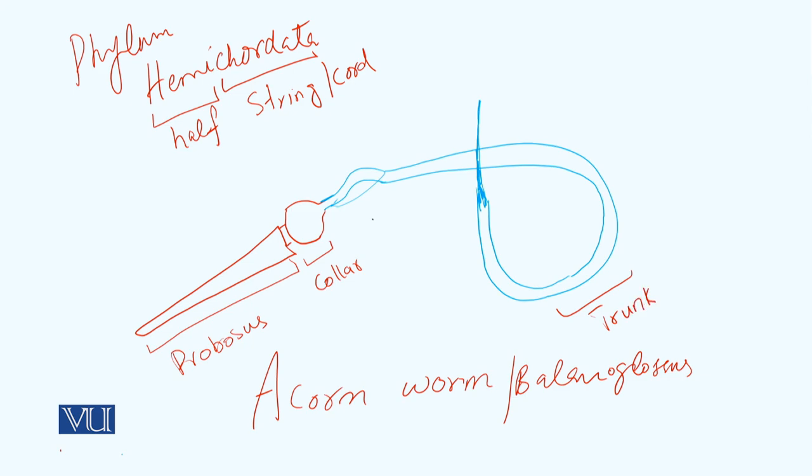Proboscis is also called prosoma. Collar is also called mesosoma. And the posterior trunk is also known as metasoma. In the proboscis part the heart exists, and in the collar here is the mouth.